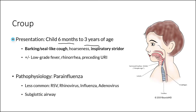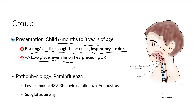Classically, this child is going to present with a barking or seal-like cough, as well as hoarseness and inspiratory stridor. Depending on the particular patient, they may also present with a low-grade fever, rhinorrhea (a runny nose), as well as a history of a preceding upper respiratory infection.